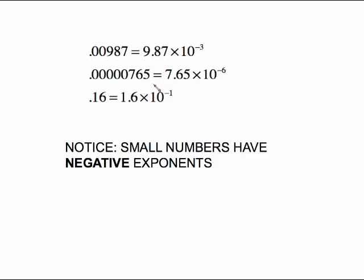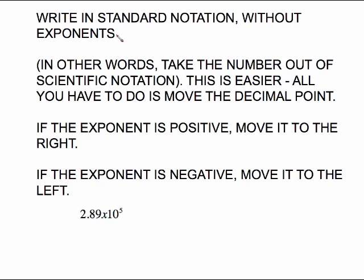That's putting numbers into scientific notation. You also have to be able to go the other direction — writing it in what's called standard notation, sometimes described as writing without exponents. We're taking the number out of scientific notation, and this is much easier. All you have to do is move the decimal point in the correct direction and the correct number of places. If the exponent is positive, move the decimal to the right; if the exponent is negative, move the decimal to the left.